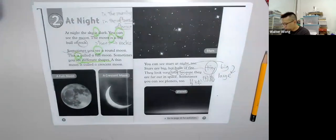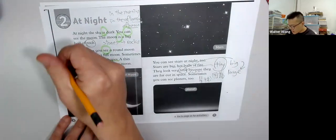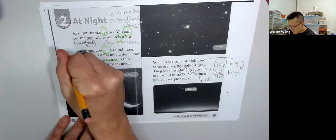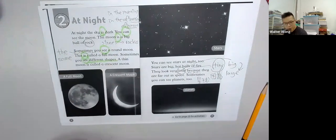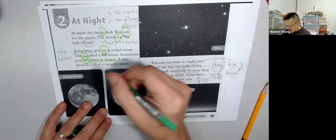Different is different. If you are the same, then you use the same. A thin moon is called a crescent moon.